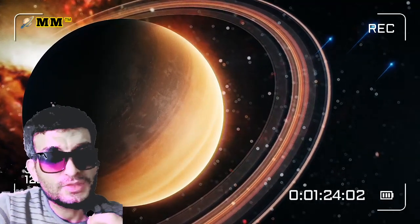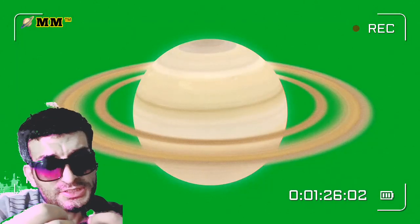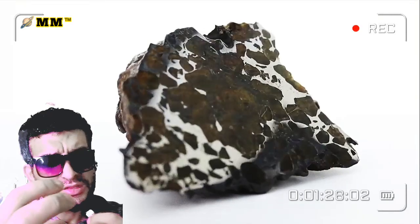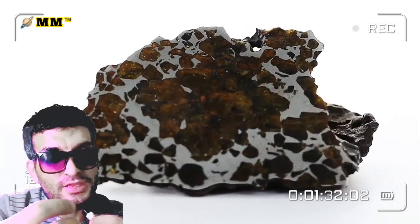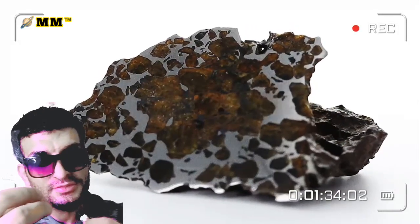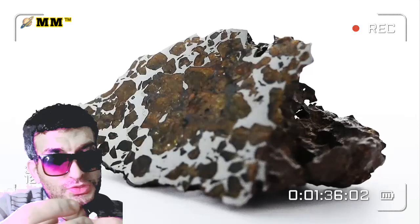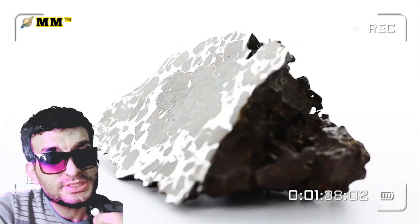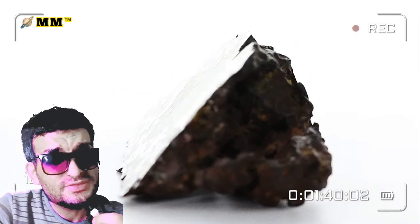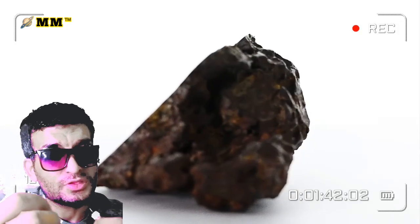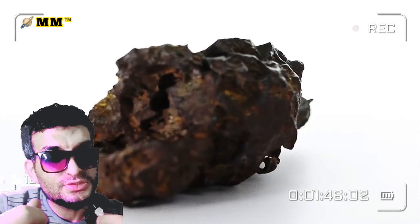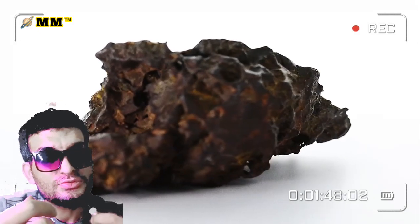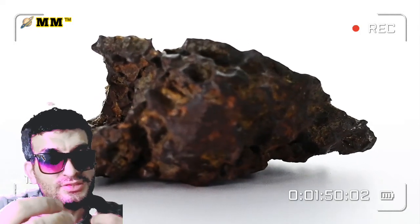A meteoroid is what we call the rock while it is in orbit and before it enters Earth's atmosphere. A meteor is the visible streak and flight that occurs as the rock passes through the atmosphere and the exterior of the rock is heated to incandescence.